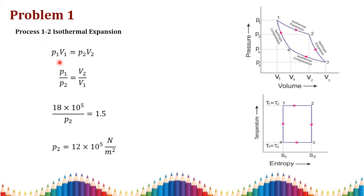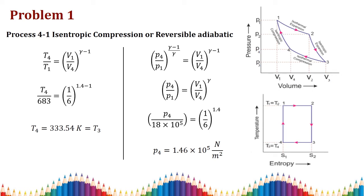For isothermal expansion, process 1 to 2: p1·v1 = p2·v2, since temperature is constant. So p1/p2 = v2/v1. Substituting p1 = 18 × 10⁵ N/m² and the ratio v2/v1 = 1.5, we get p2 = 12 × 10⁵ N/m².